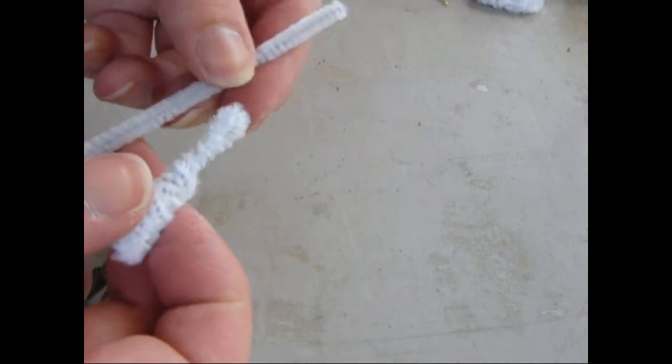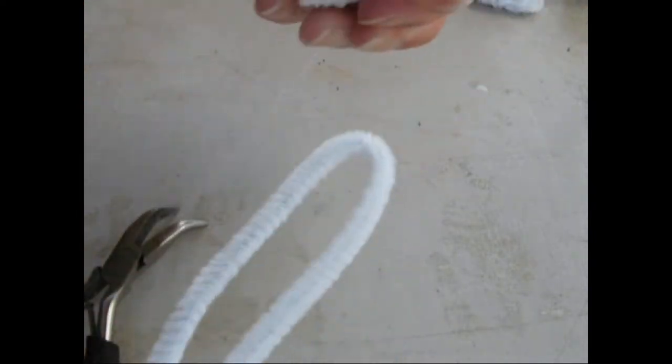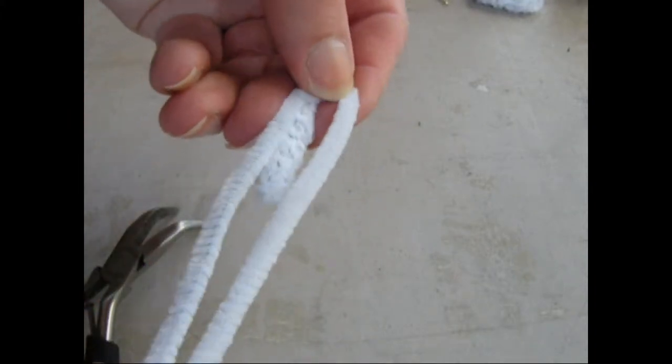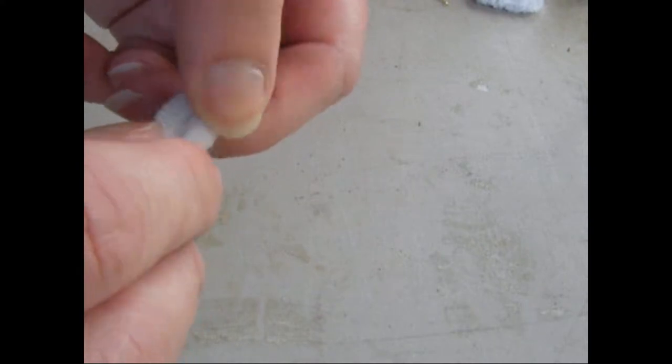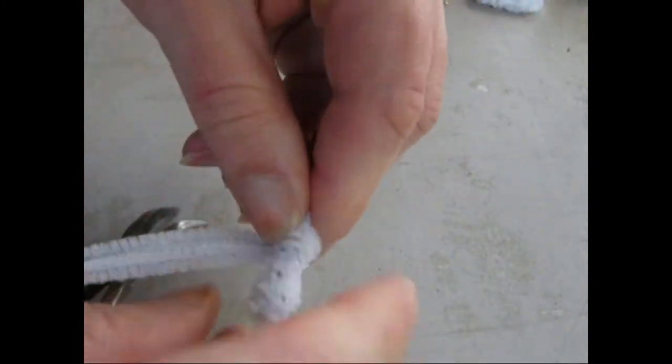Now you're going to want to get another pipe cleaner, fold it in half, and line this loop up with the previous loop that you made first. Once it's lined up, you're going to want to start twisting it around from the top all the way down to the bottom. When you get to the bottom, just keep wrapping it around the bottom because you want the bottom fatter than the top. Just kind of pinch it together, and there's your teardrop.